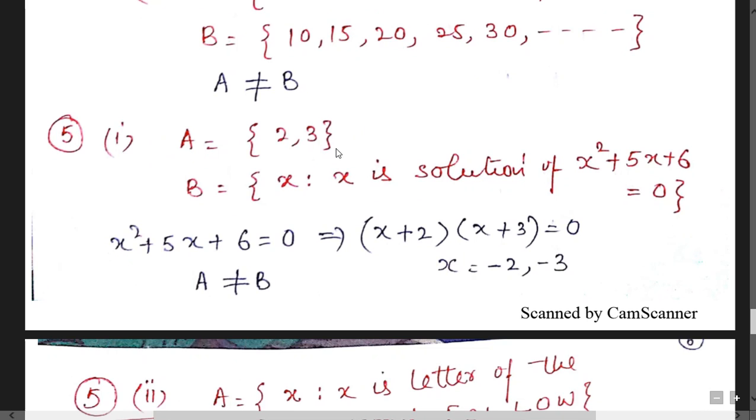Same criteria is there in question number 5. First elements are 2, 3. X is the solution of the equation x square plus 5x plus 6. Let us solve this equation. Make the factors. You will get minus 2 and minus 3. It means both the sets are not equal.